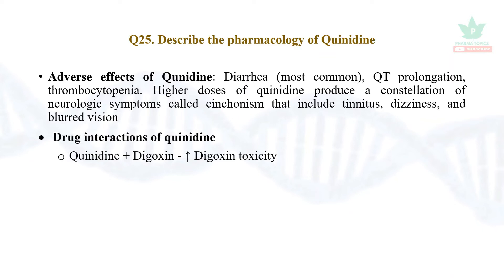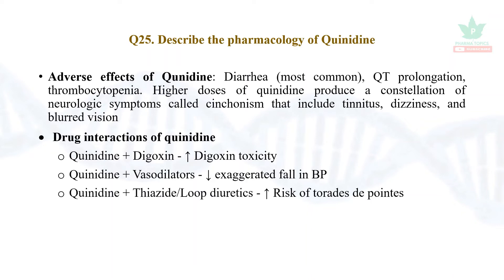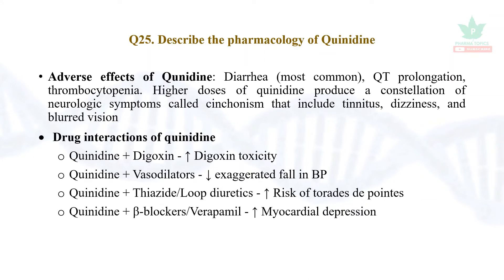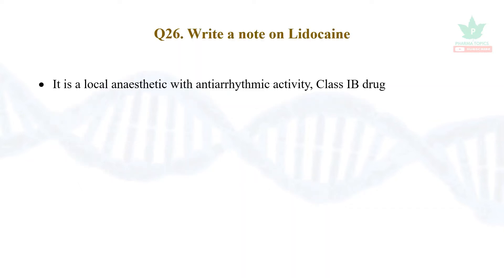Drug interactions: with digoxin, it increases digoxin toxicity via a displacement reaction. With vasodilators, since it already causes alpha blockade, it decreases blood pressure further. With thiazide or loop diuretics, it increases the risk of torsades de pointes, that is QT prolongation. With beta blockers and verapamil, it increases myocardial depression.